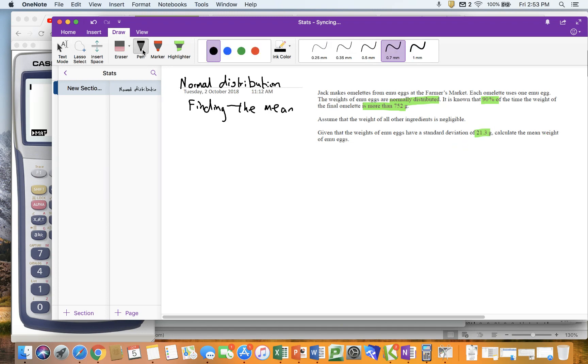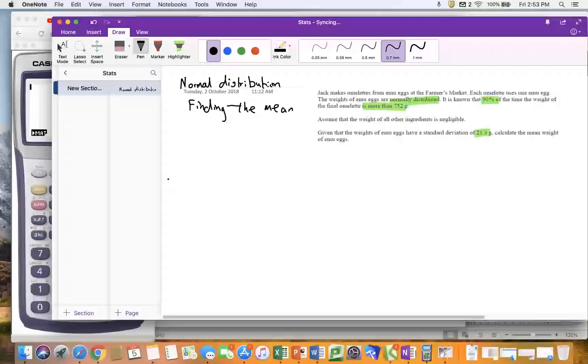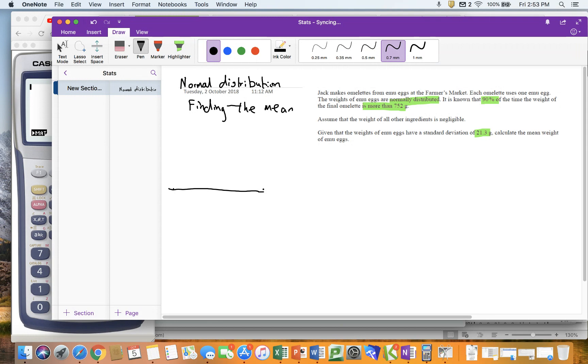Calculate the mean weight. So the first thing I'm going to do is I'm going to draw my normal distribution. Now I always do this as a really shabby drawing on here. Let's see if I'm any better today. Not really. That is absolutely terrible. You'd struggle to identify that to be bell-shaped. Let's try again. We're just going to roll with it. So I'm going to try a different technique this time.